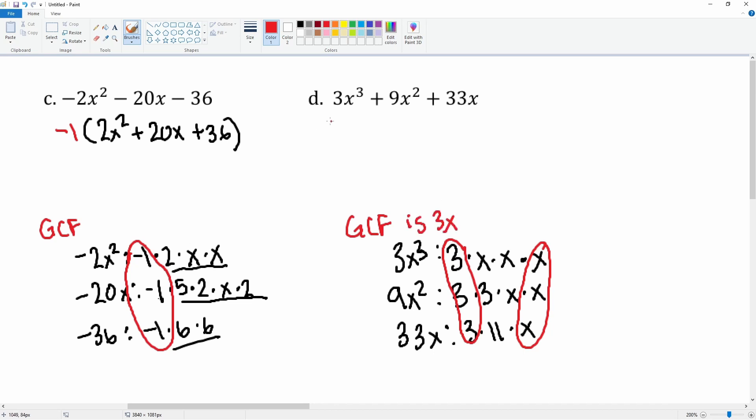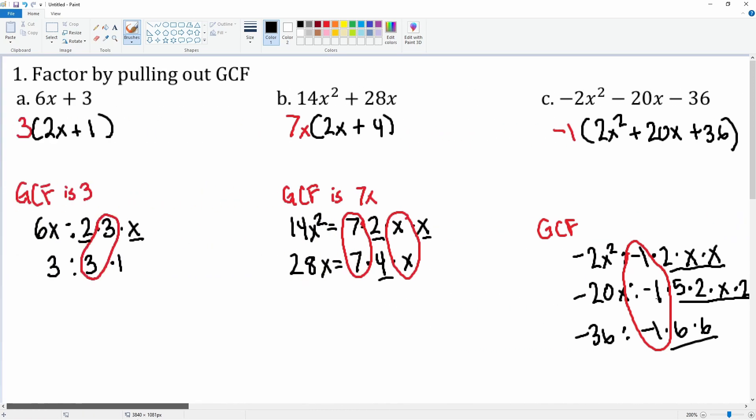We circle what's common: 3 and x, so the GCF is 3x. Factoring out 3x, we're left with x² from the first term, plus 3x from the second term, plus 11 from the third. That's how you factor out the GCF.